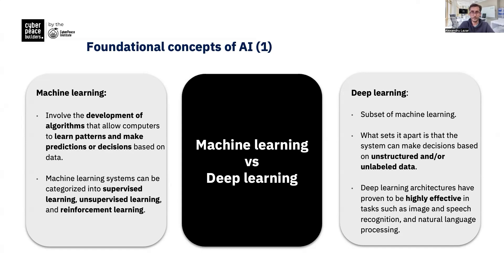Think of machine learning more like labeling data to make decisions — like teaching a child with flashcards. Then we have deep learning, a further subset using neural networks to achieve even more complex tasks. Deep learning uses neural networks to analyze unlabeled data, and this is perfect for recognizing images, understanding speech, and generating audio and video. It has broader applications especially nowadays.